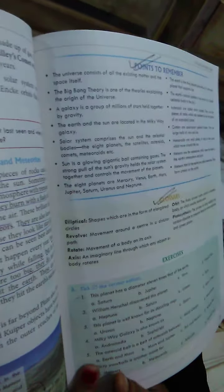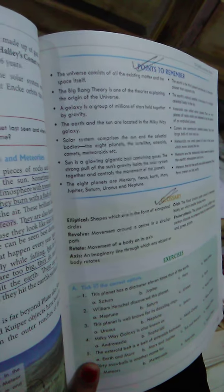A galaxy is a group of millions of stars held together by gravity. The Earth and the Sun are located in the Milky Way galaxy.